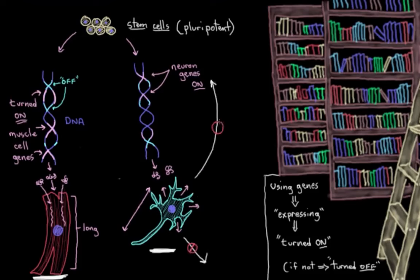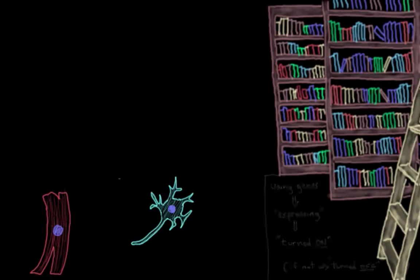At least in us humans. So these cells stick around to form our bodies. So by now you must be wondering, what determines what genes in a given cell are turned on or off?